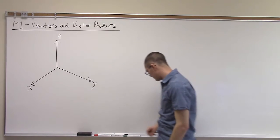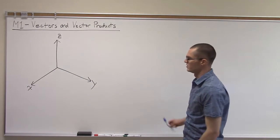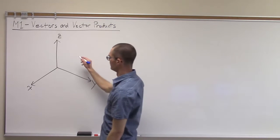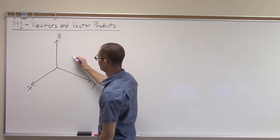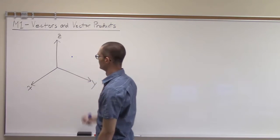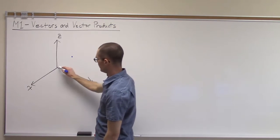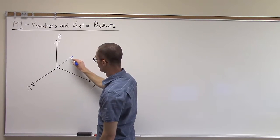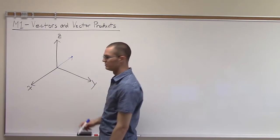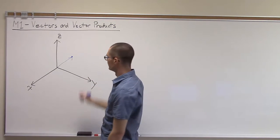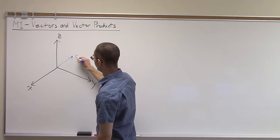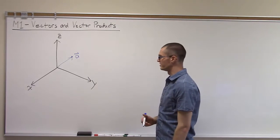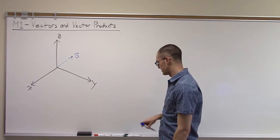In this coordinate system, we can define a position vector — say to a point here — as a vector that points from the origin to that point. I'll call that vector A, with an arrow on top to indicate that it's a vector.